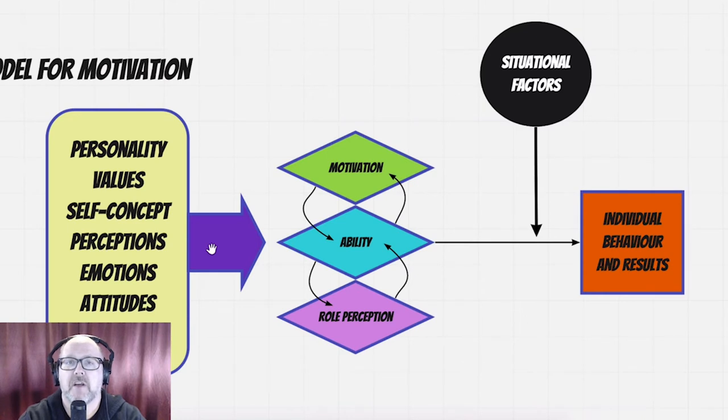Role perception is interesting because it talks about how somebody sees themselves in regards to a particular role, job, or function within the team. Those role perceptions get clearer when people understand there's an accountability process in place—not just negative or disciplinary, but understanding what's a priority, what's massively important versus just important. Having clear roles helps people do their job well.